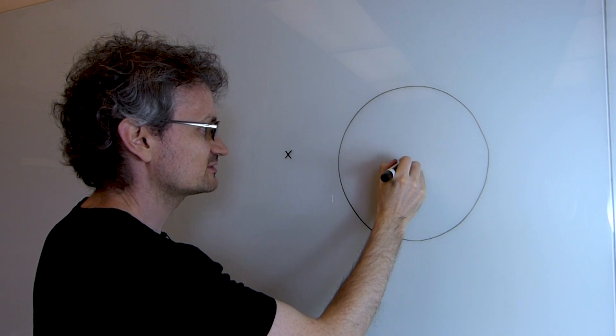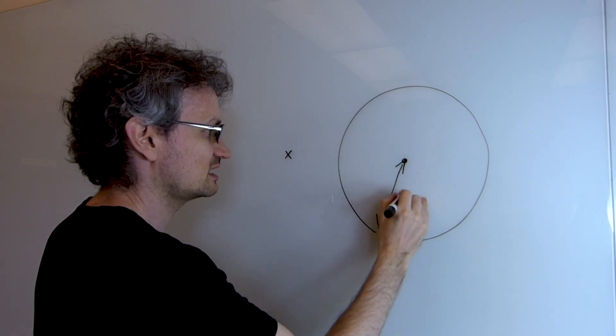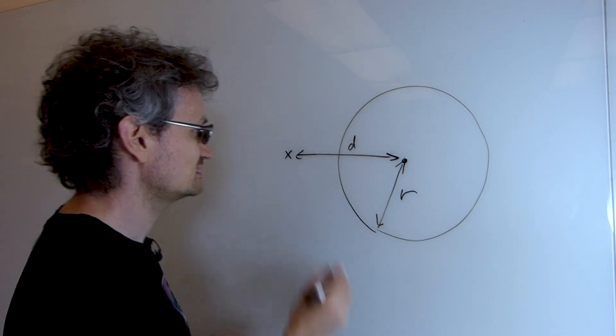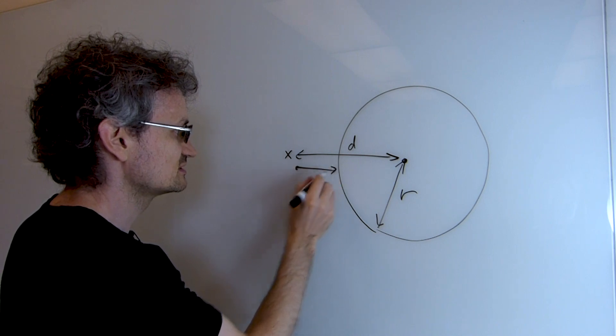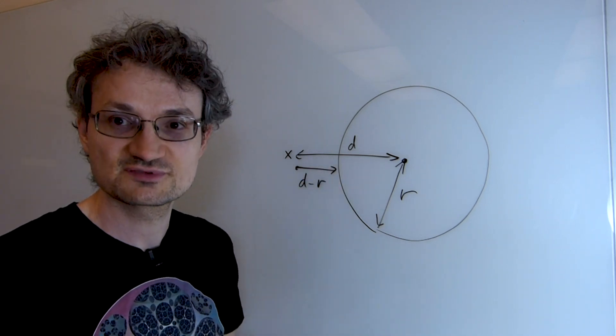So for example, if I've got a sphere radius r and I am a distance d away from the center of the sphere, then the signed distance function returns d minus r, which is how far we are away from the surface of the sphere.